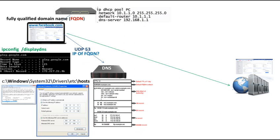An attacker can insert false data into a zone file — for example, the facebook.com FQDN can be mapped to a false IP address, so your laptop will be redirected to a false IP address or a false website instead of the actual facebook.com. An attacker can also corrupt your local DNS cache.